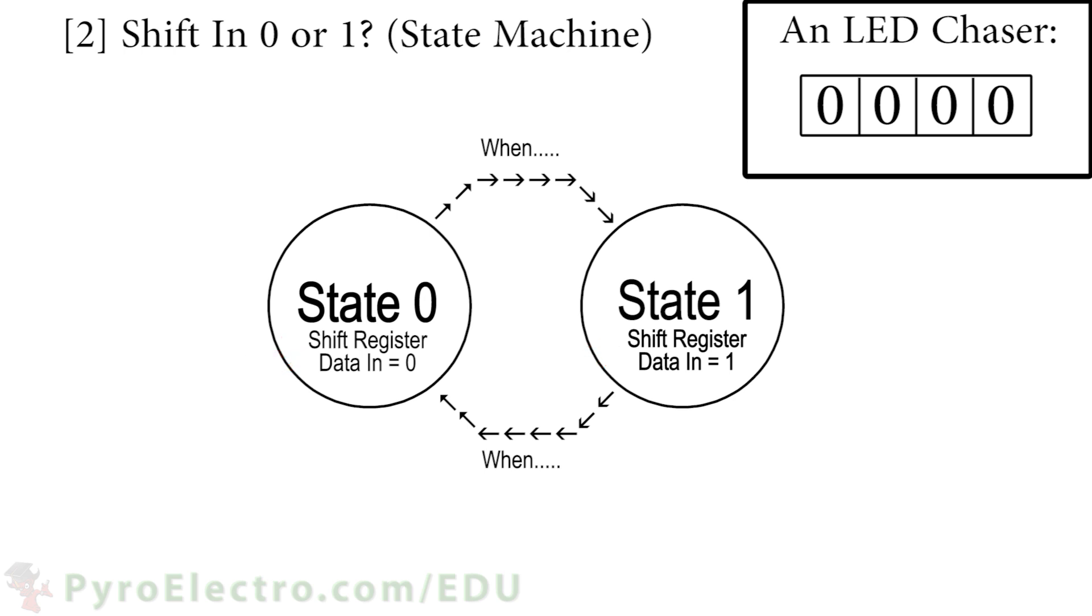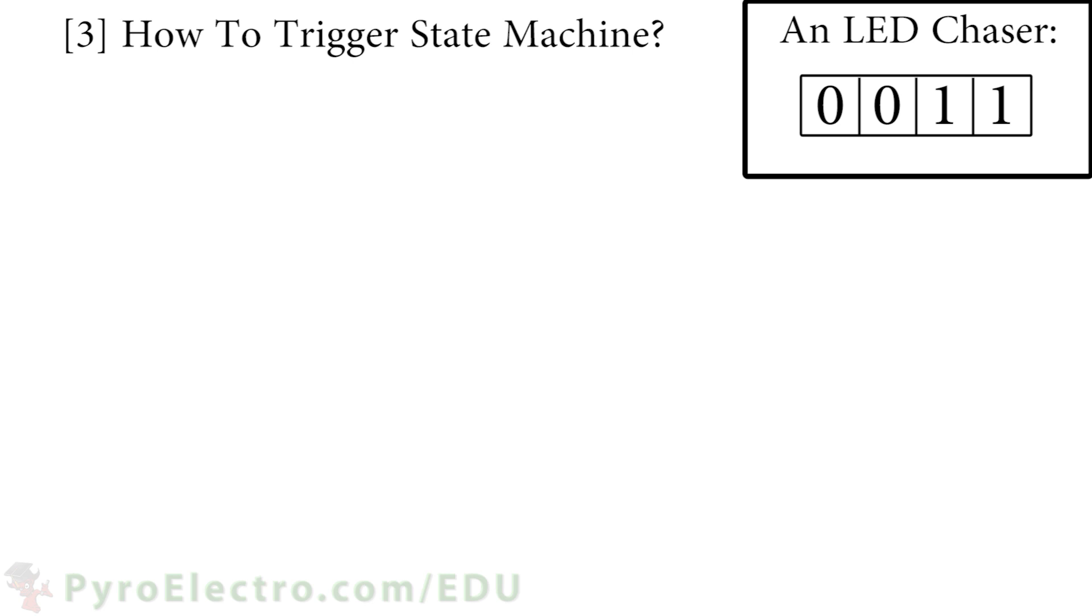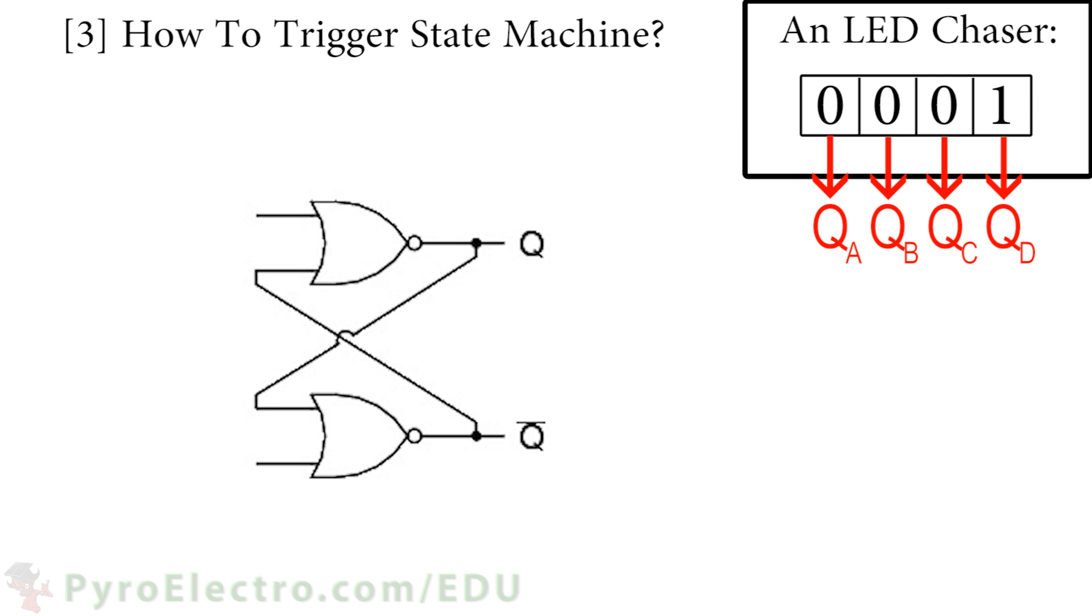But now, how do we trigger each state to be active? A very easy way to build a two-state machine is to use the SR latch from Lesson 5. The latch will either be set or reset, meaning that the system will either be in state zero or state one.